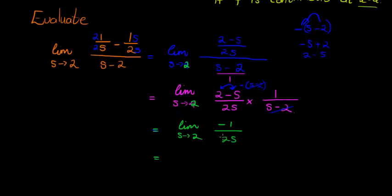Because now when I substitute the 2, it is 2 times 2. There is no zero in any denominator. Then I get negative 1 over 4. Negative 1 over 2 times 2 is 4.